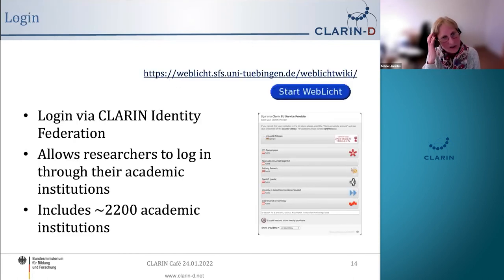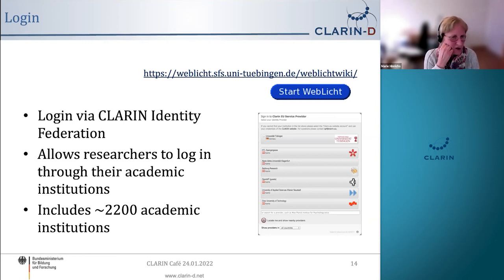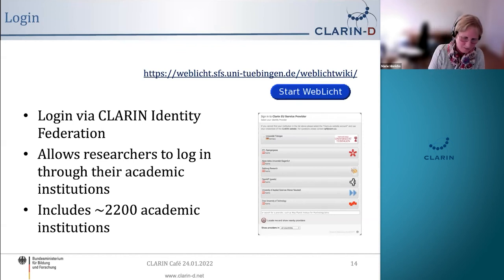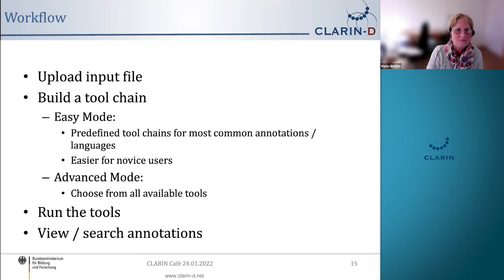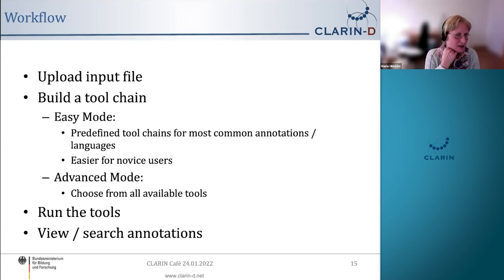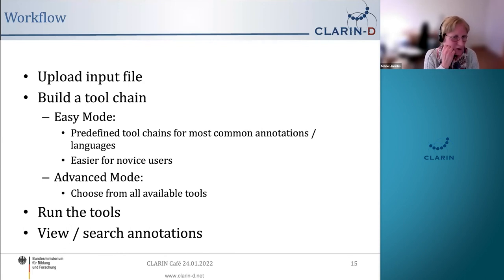WebLicht uses login via the CLARIN identity federation, which allows researchers to log in through their own academic institution. Currently there are approximately 2,200 institutions that are part of it — it's a single sign-on, somewhat like signing into your GitHub account with your Google account. The general workflow is: upload a file, build the tool chain either with easy mode using predefined chains or with advanced mode where you choose from all available tools, then run the tools and view and search the annotations.